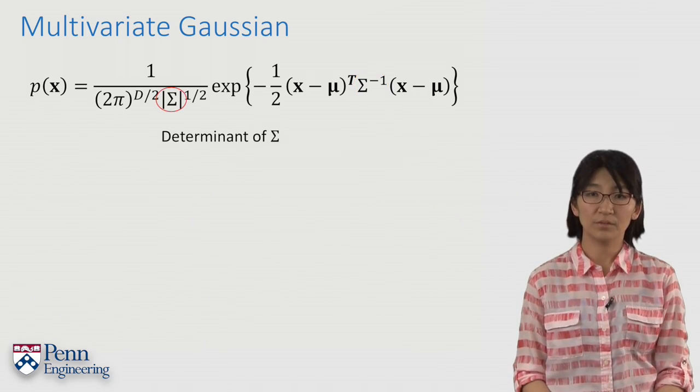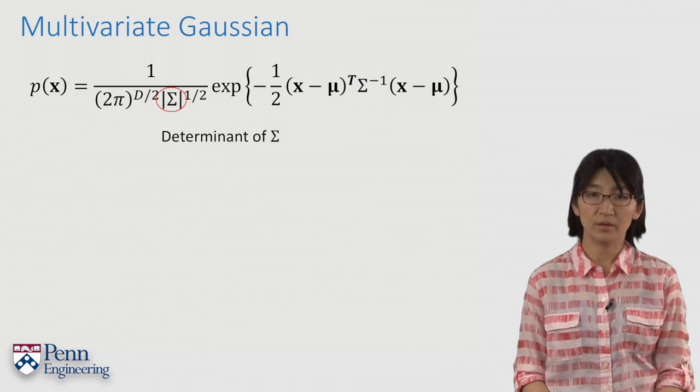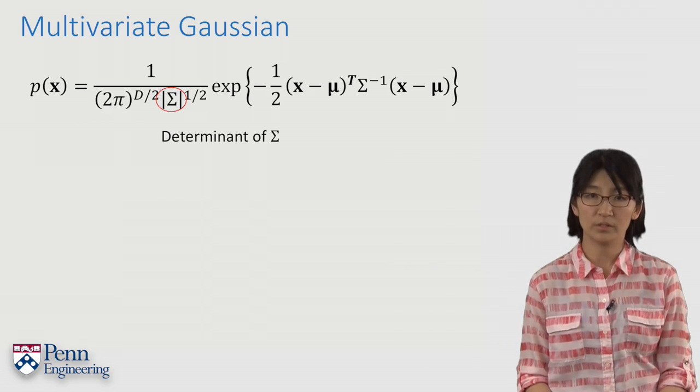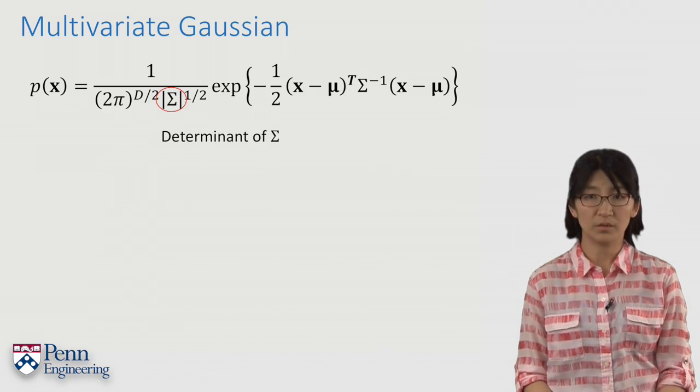Lastly, the vertical bars around sigma in the denominator of our equation indicate the determinant of sigma.